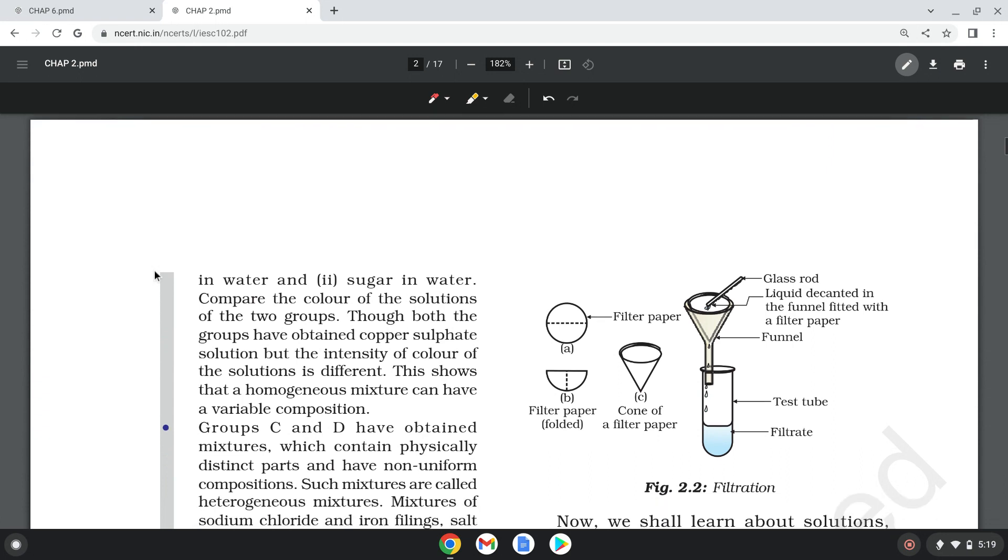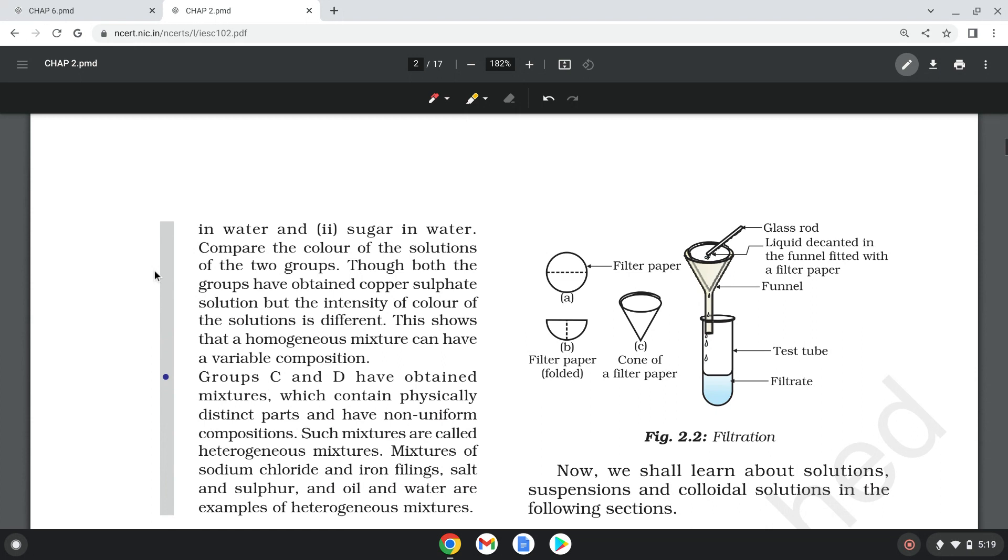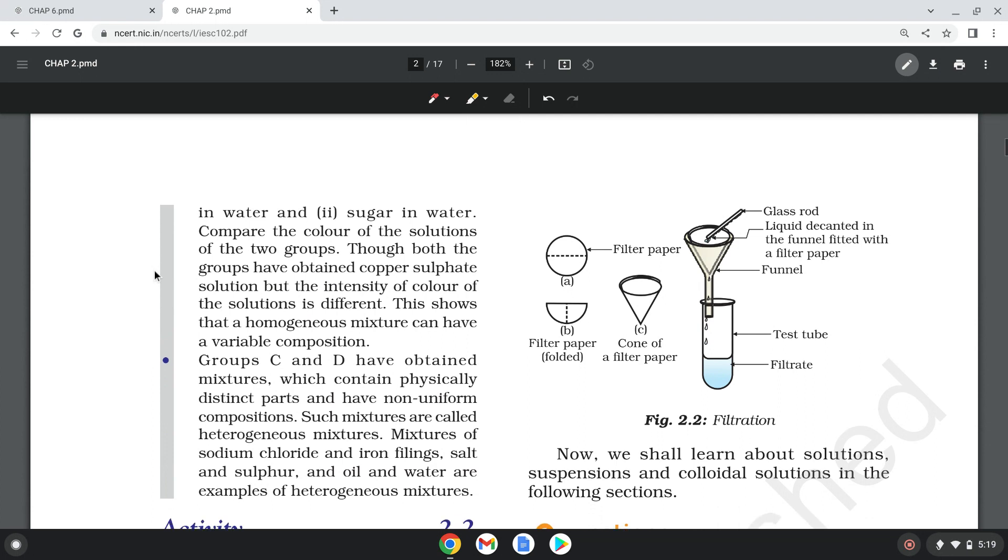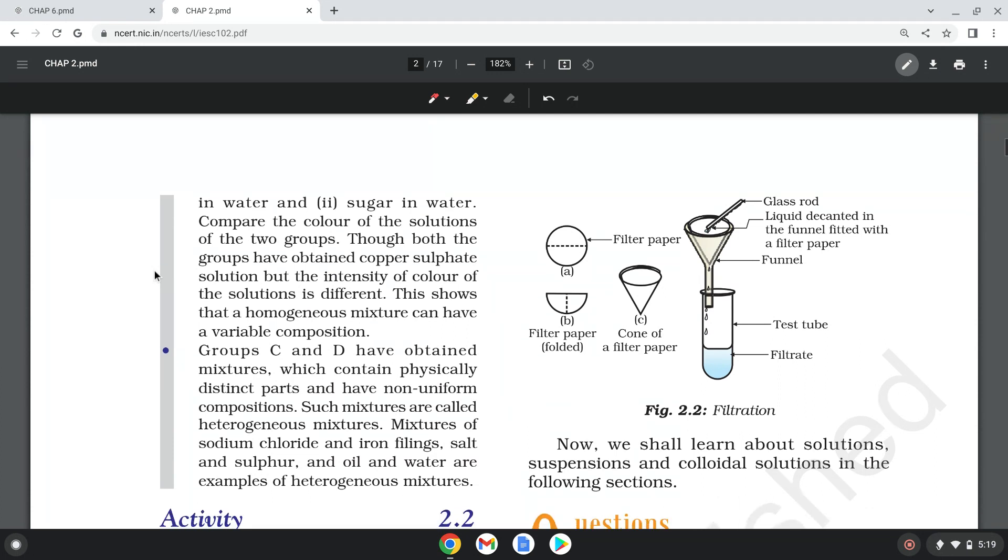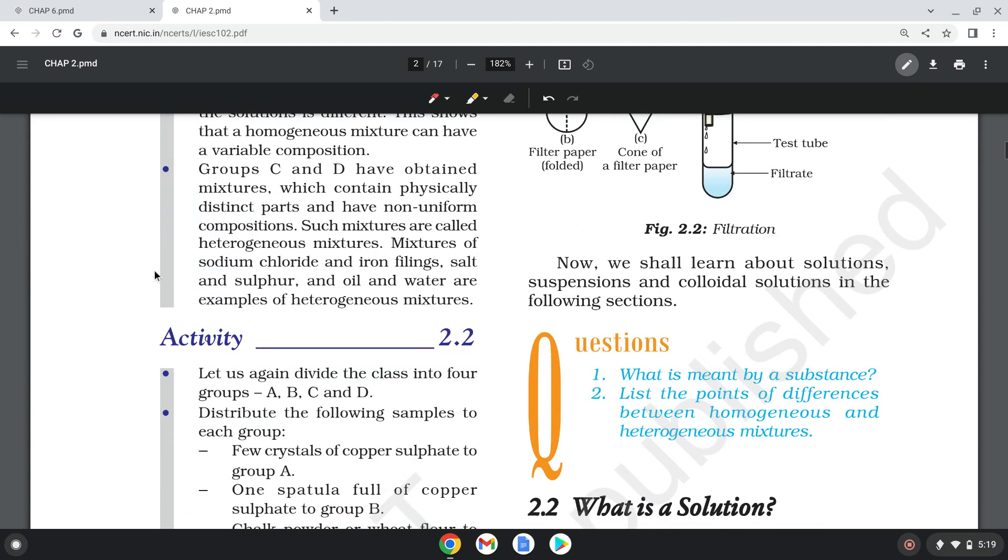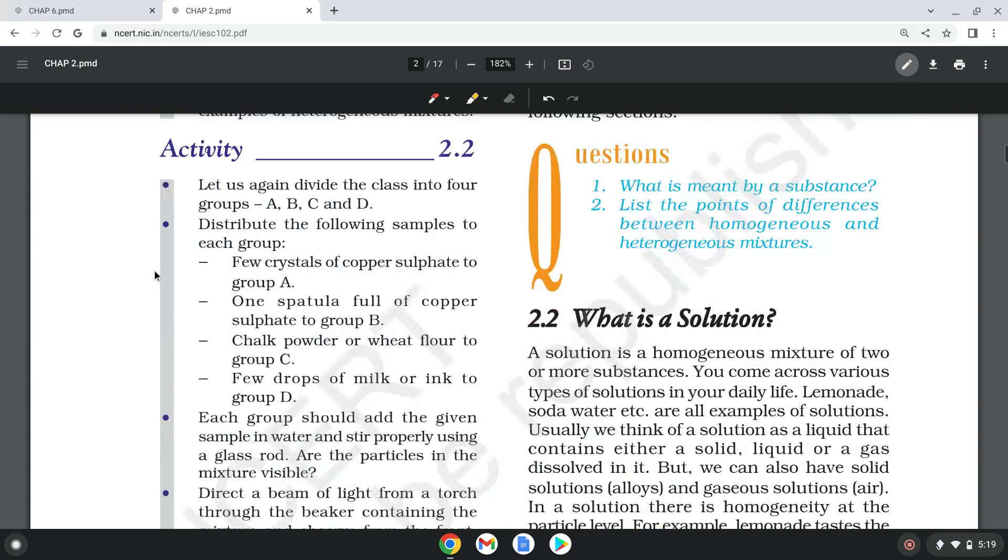Groups C and D have made a mixture that is different physically - distinct parts and non-uniform composition. This is a heterogeneous mixture, like sodium chloride and iron filings, salt and sulfur, oil and water. All these are examples of heterogeneous mixtures.